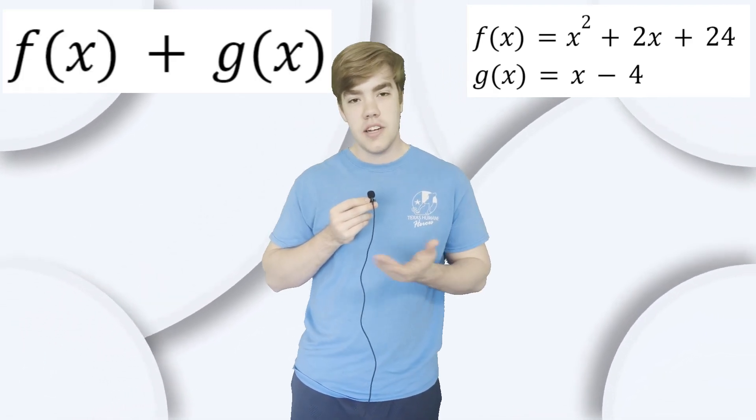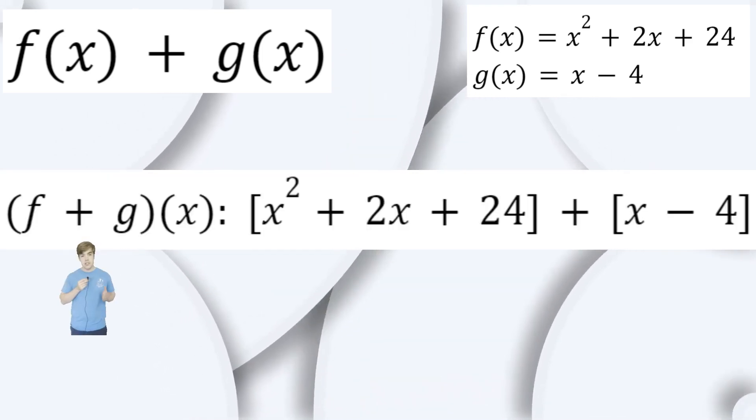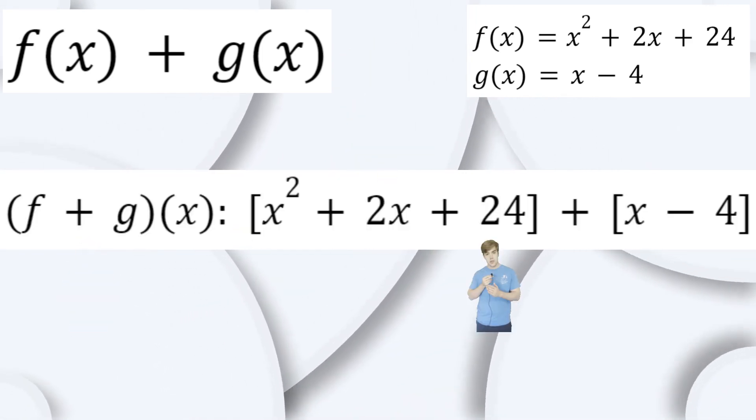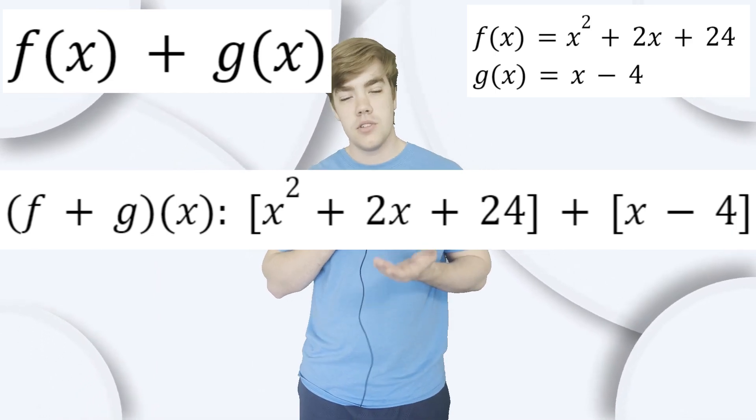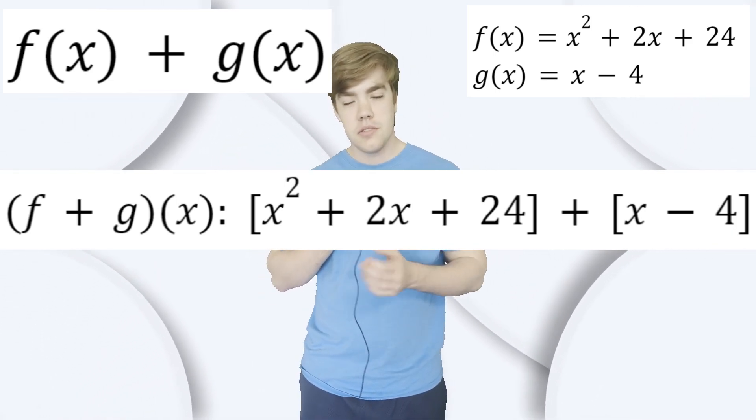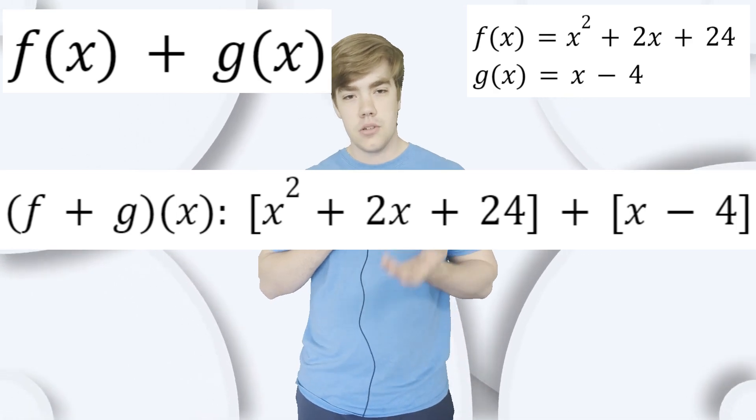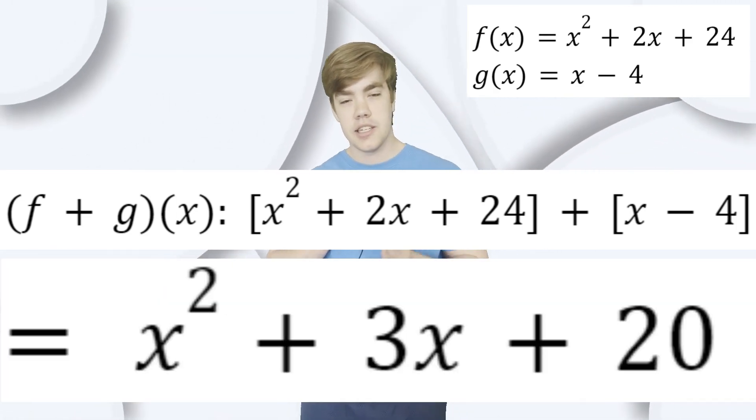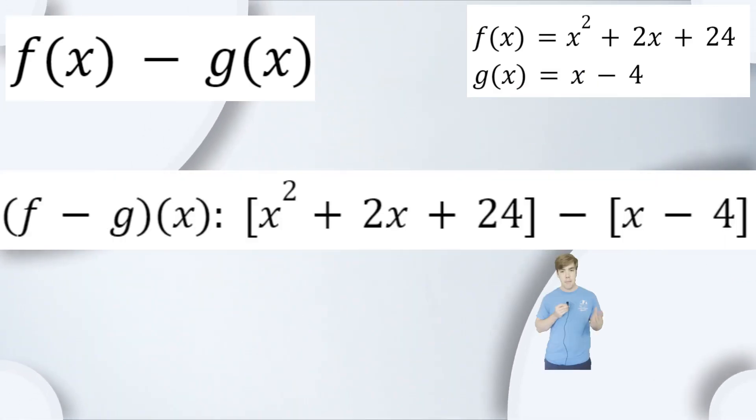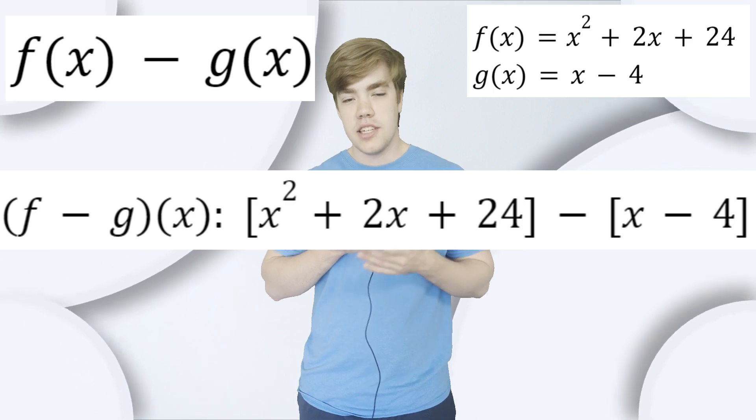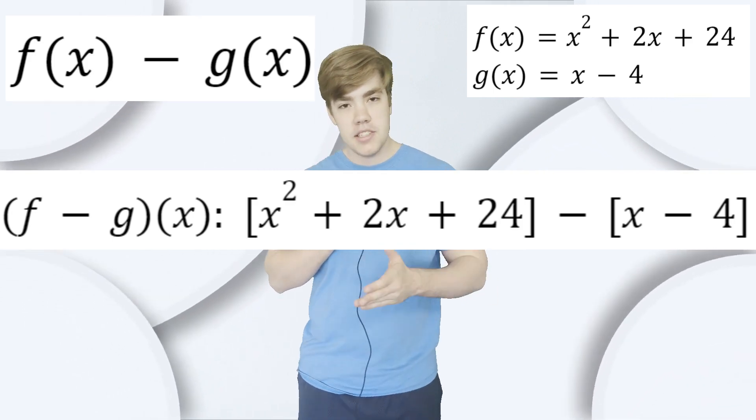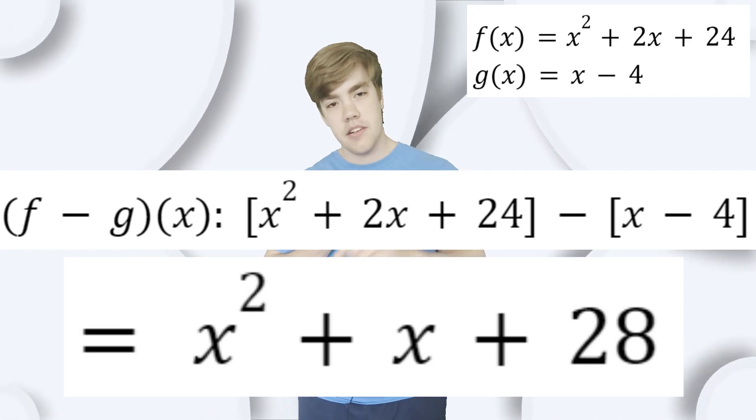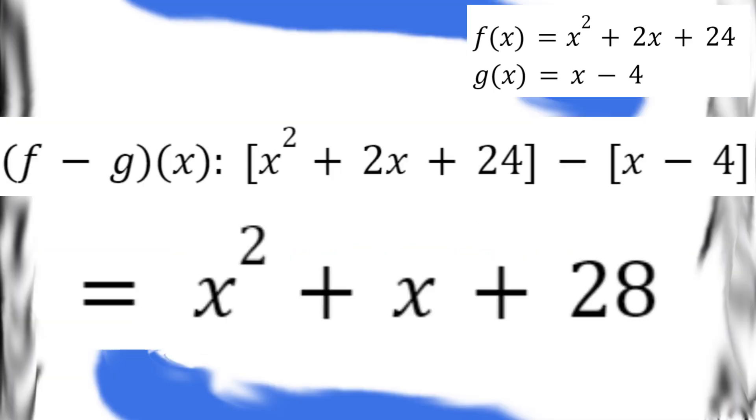First, we'll start pretty easy. f plus g of x is simply adding the two functions together. So all we have to do is add x squared plus 2x plus 24 to x minus 4. x squared is the only squared component, so that just stays as x squared. 2x plus x equals 3x. And 24 plus negative 4 is just 20. So f plus g of x is equal to x squared plus 3x plus 20. Now let's do f minus g of x. f minus g of x is simply equal to x squared plus 2x plus 24 minus x minus 4. So once again, there is only 1x squared, so that stays the same as x squared. 2x minus x is equal to just 1x. And 24 minus a negative 4 is the same thing as 24 plus 4, which is just 28.